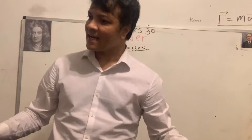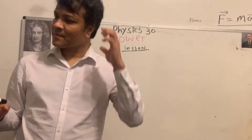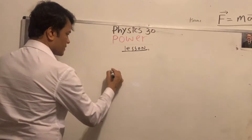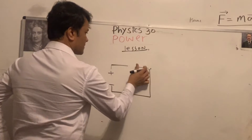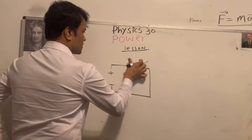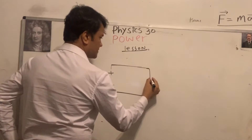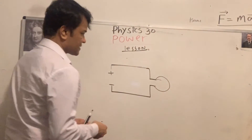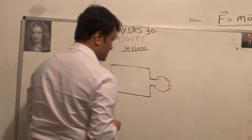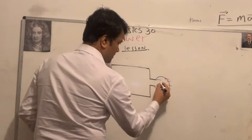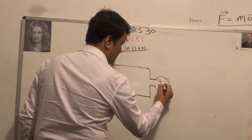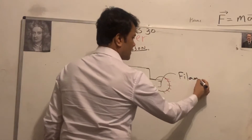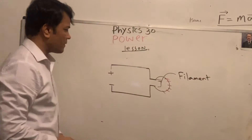Can you transform electric energy to light? Yes! We always see light around us. For example, a light bulb — it has two terminals, like a circuit. A light bulb is made of a filament inside.